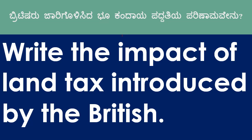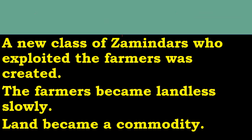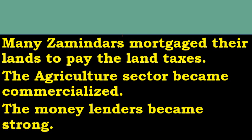Write the impact of land tax introduced by the British — a very important question. Again 6 points you need to write: A new class of zamindars who exploited the farmers was created. The farmers became landless slowly. Land became a commodity. Many zamindars mortgaged their lands to pay the land taxes. The agriculture sector became commercialized. The money lenders became strong.